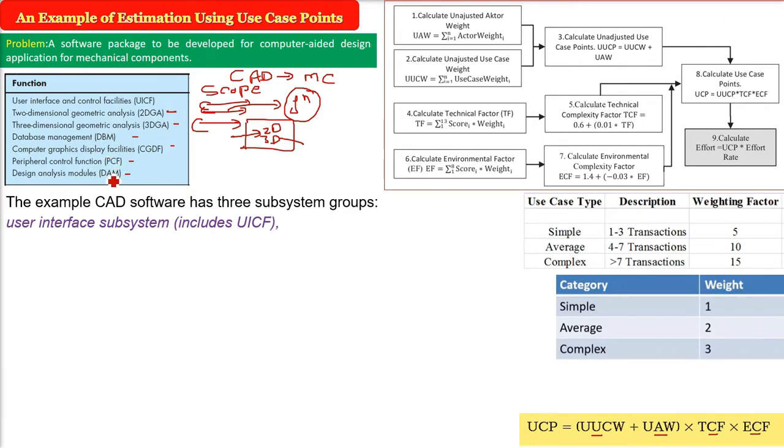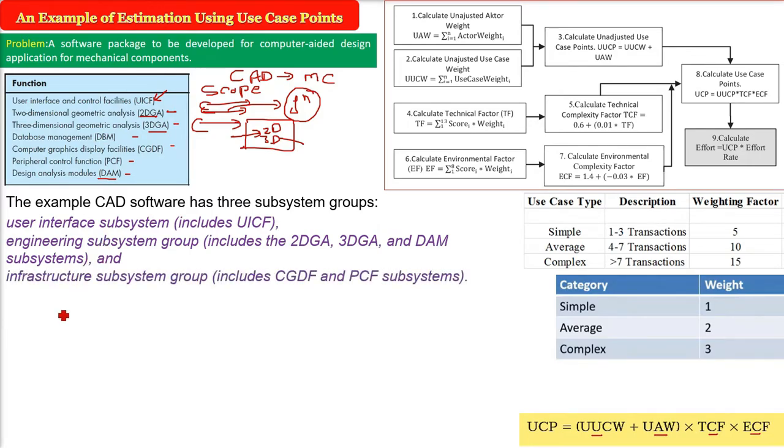The example CAD software has three subsystem groups. First is user interface subsystem, it has UICF. Engineering subsystem group, it has the 2DGA, 3DGA, DAM which is the design analysis module. And in infrastructure subsystem group, you have CGDF and PCF, that is computer graphic display facility and peripheral control function. Now the numbers of all these I'm giving you.